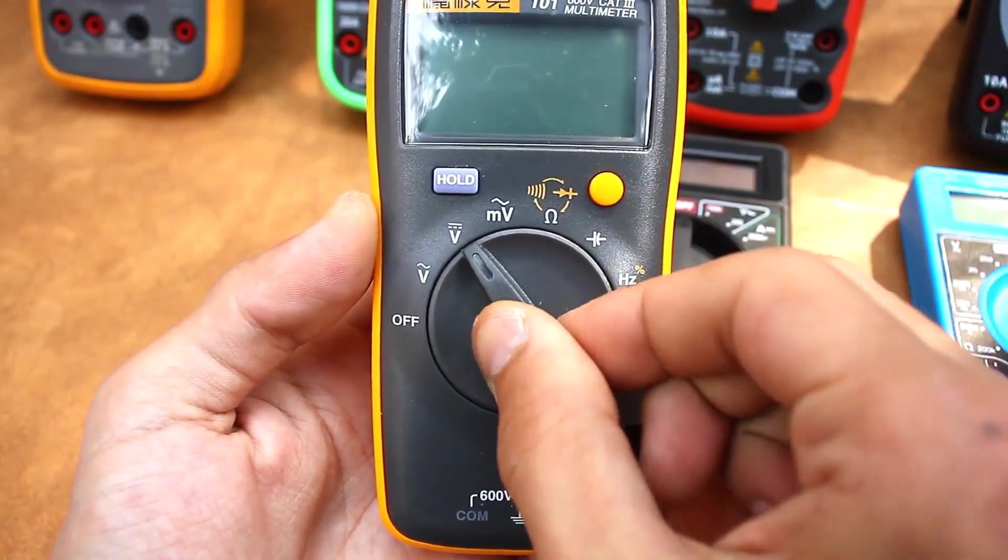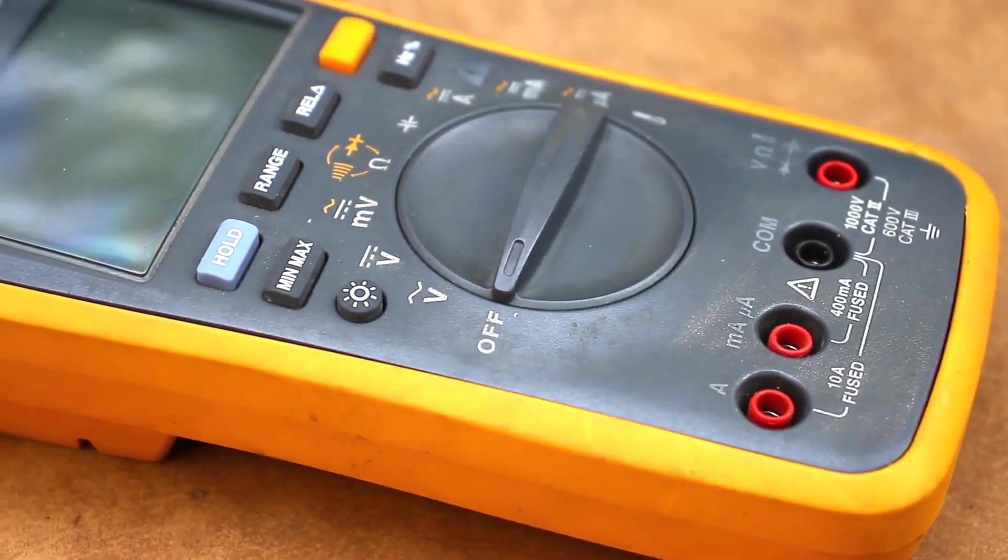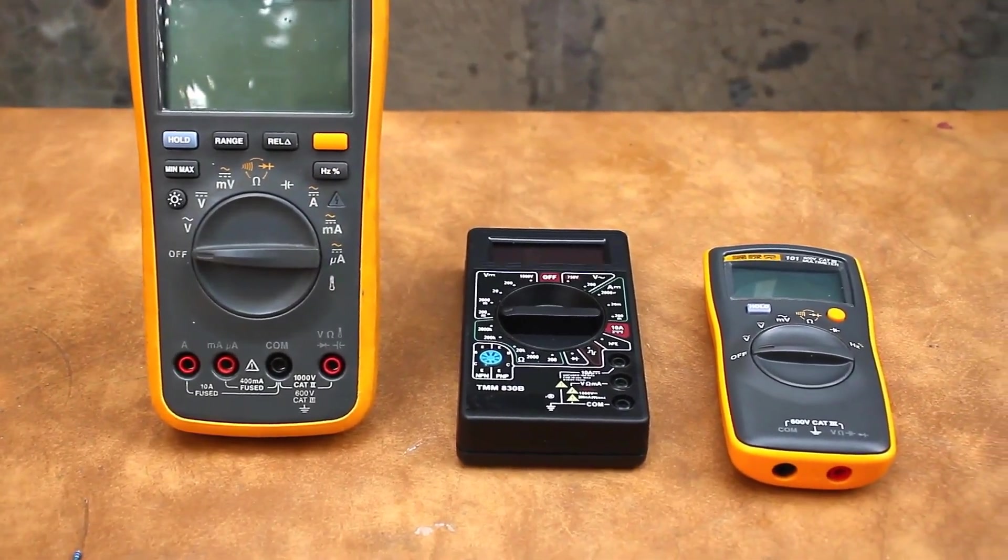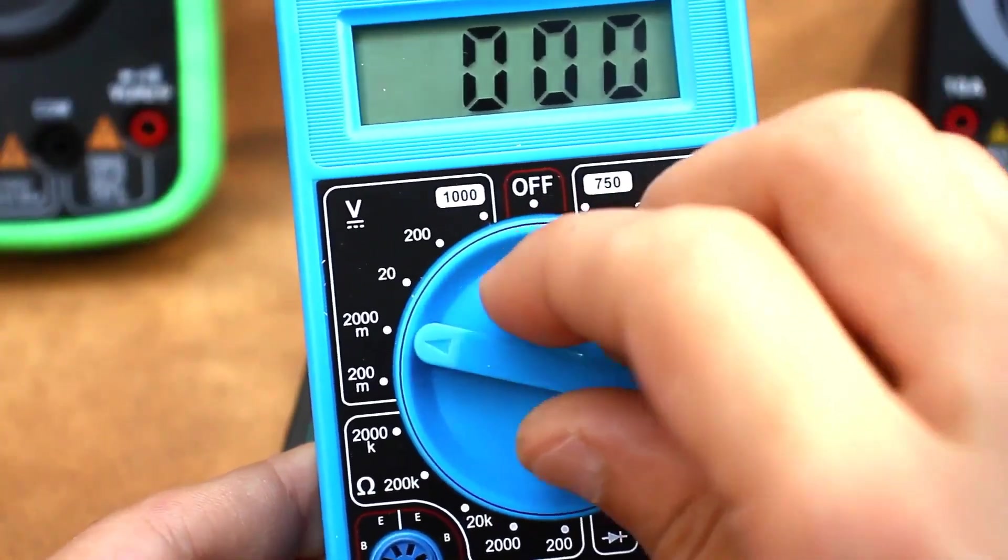Digital multimeters are more compact, lightweight, and convenient to use. In turn, digital multimeters come in two types, with manual range selection and auto selection.